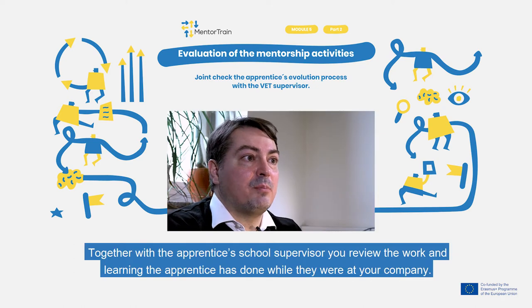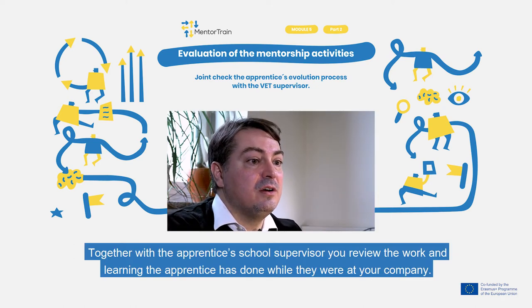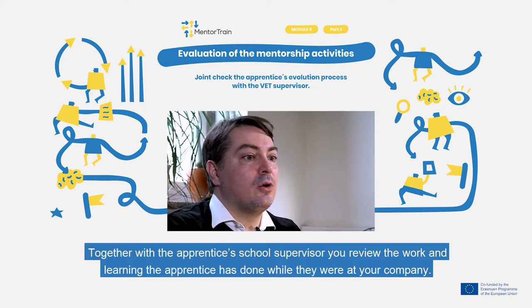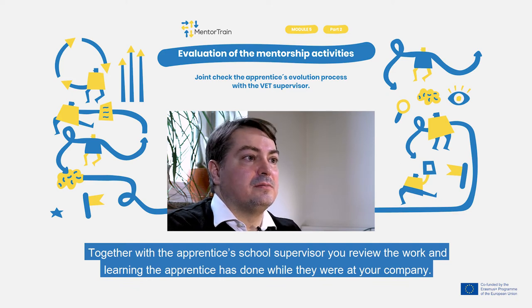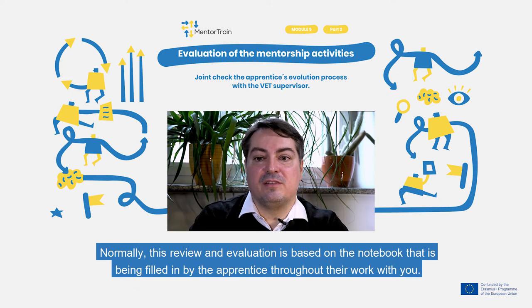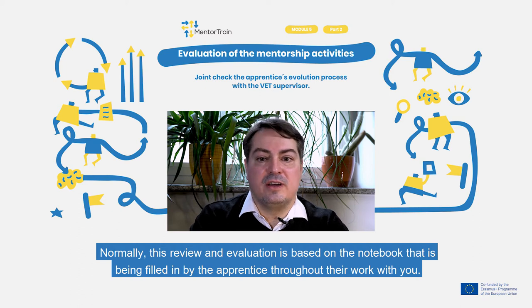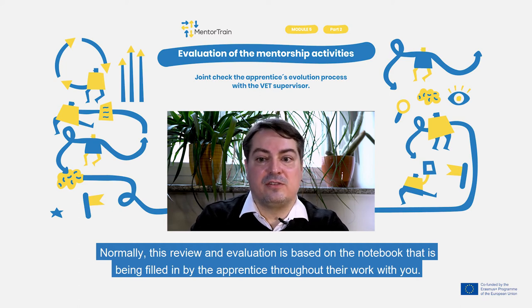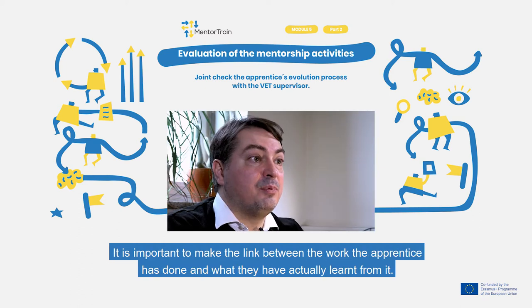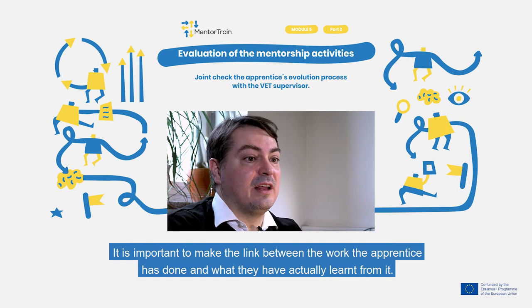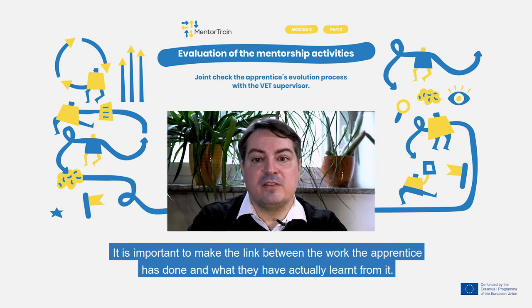Together with the apprentice's school supervisor, you review the work and learning the apprentice has done while they were at your company. Normally, this review and evaluation is based on a notebook that is being filled in by the apprentice throughout their work with you. It is important to make the link between the work the apprentice has done and what they have actually learned from it.